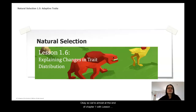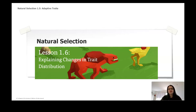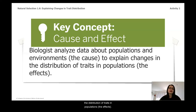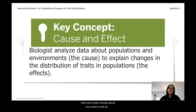We're almost at the end of Chapter 1 with Lesson 1.6: Explaining Changes in Trait Distribution. A useful key concept here about cause and effect: biologists analyze data about population and environment — the causes — to explain changes in the distribution of traits in populations — the effects. That's actually what we've been doing this whole time: thinking about why a trait would be adaptive or non-adaptive depending on the environment the organism is living in.